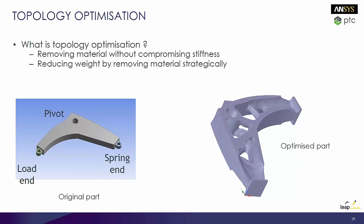In the past this used to be a trial and error process — you would look at where stresses were quite low and then start removing material. But you've also got to take into consideration whether you can actually manufacture that. It might be taking away material but that area might be needed, or it might be an area that you can't machine away because it would compromise the structural integrity, or you just can't make it.